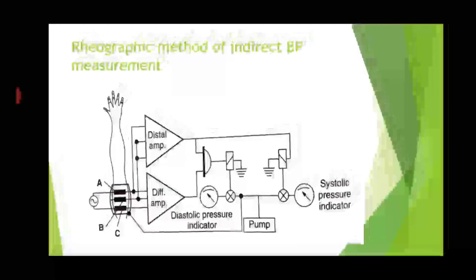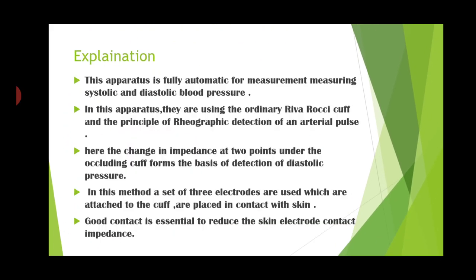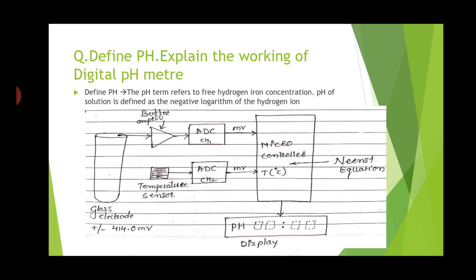Now we will see the rheographic method of indirect BP measurement. The diagram uses three electrodes A, B, and C. This apparatus is fully automatic for measuring systolic and diastolic blood pressure, using the ordinary Riva-Rocci cuff and the principle of rheographic detection of an arterial pulse. The change in impedance at two points under the occluding cuff forms the basis for detection of diastolic pressure. A set of three electrodes attached to the cuff are placed in contact with the skin; good contact is essential to reduce skin-electrode contact impedance.